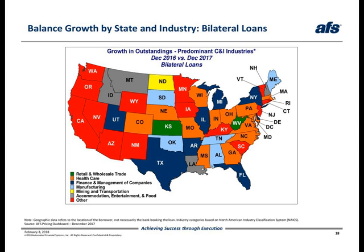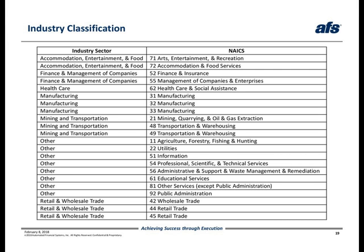In this special topic section of today's webcast, we'll also get into much more detail on the growth that took place in the manufacturing sector during 2017. To help you understand how the industry groupings presented here are defined, slide 19 provides a breakdown of the industry groupings. We combine similar two-digit NAICS sectors to create broader industry groups. This helps to present a much more concise picture of the industry growth trends across the country. For example, we combine the three NAICS manufacturing categories into an aggregate manufacturing segment.